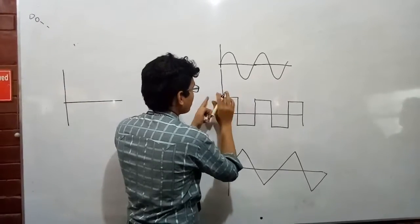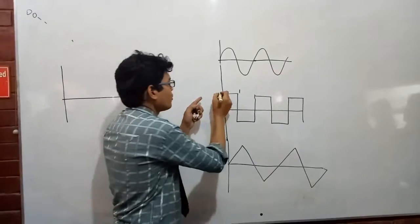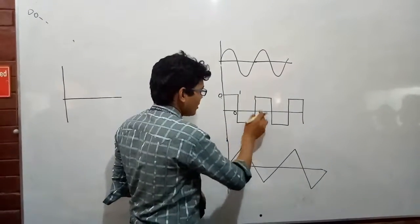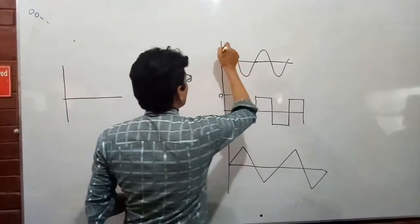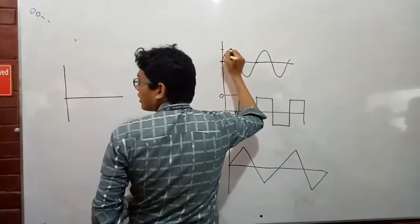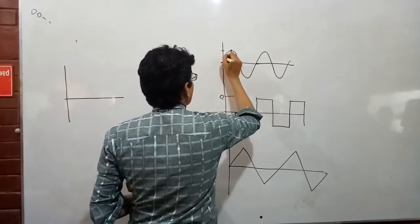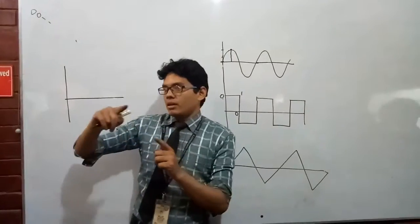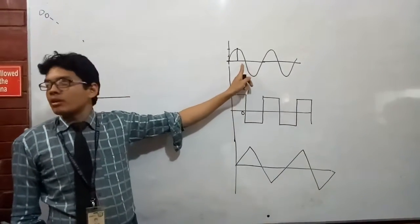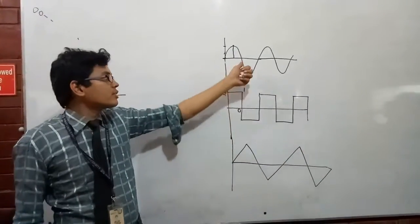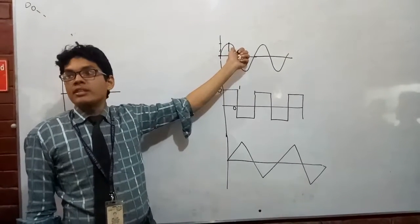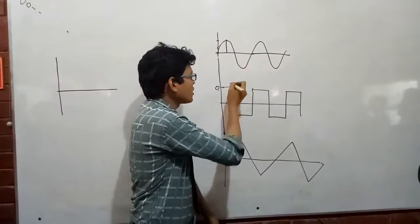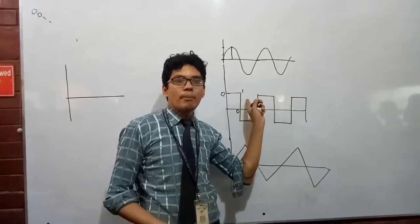In digital systems, the value is either one or zero — it goes up to one and then suddenly drops to zero, then minus one, and so on. But in a sinusoidal wave, the value gradually changes — it might be 0.5 or 0.8 before reaching the peak. That's the continuous or instantaneous value. This is why in digital electronics we use the rectangular wave shape.